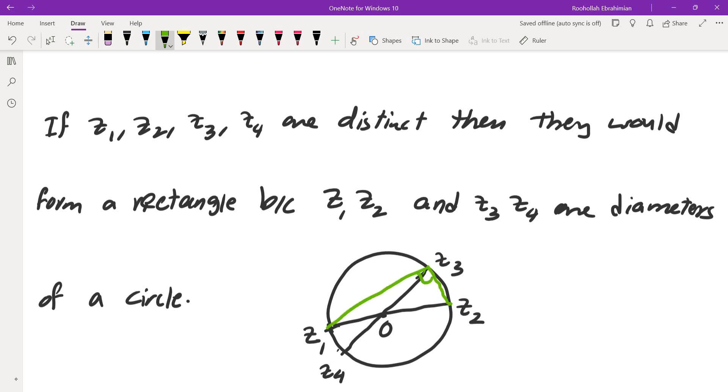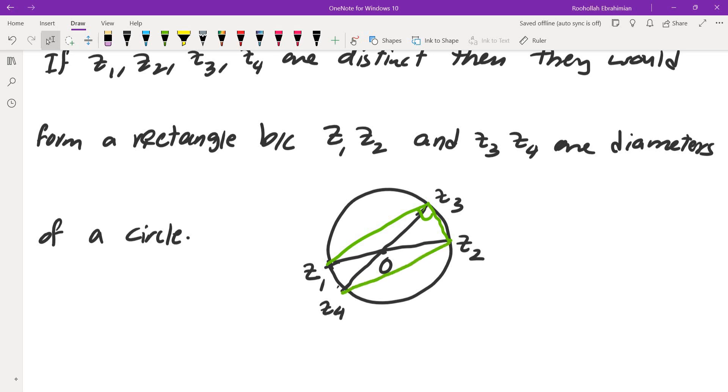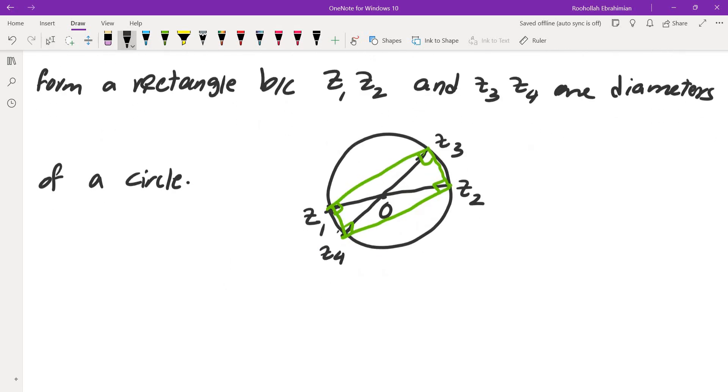This angle is a right angle because it's opposite to z1 z2. This angle is also a right angle because it's opposite to z3 z4, and similarly, these angles are all right angles, which means that's a rectangle.